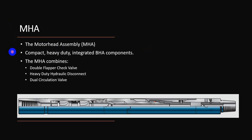The MHA (motorway assembly) consists of a double flapper, hydraulic disconnect, and double circulation sub. This is a compact heavy-duty assembly commonly used with mud motors to decrease the total length of the BHA.